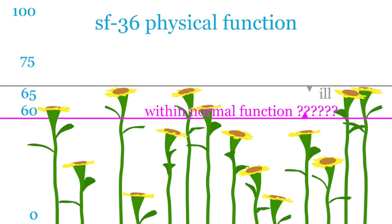And if you look at the questions and try and score 60, you will see that there is no way whatsoever that a person in their late 30s would describe that score as being within normal function.